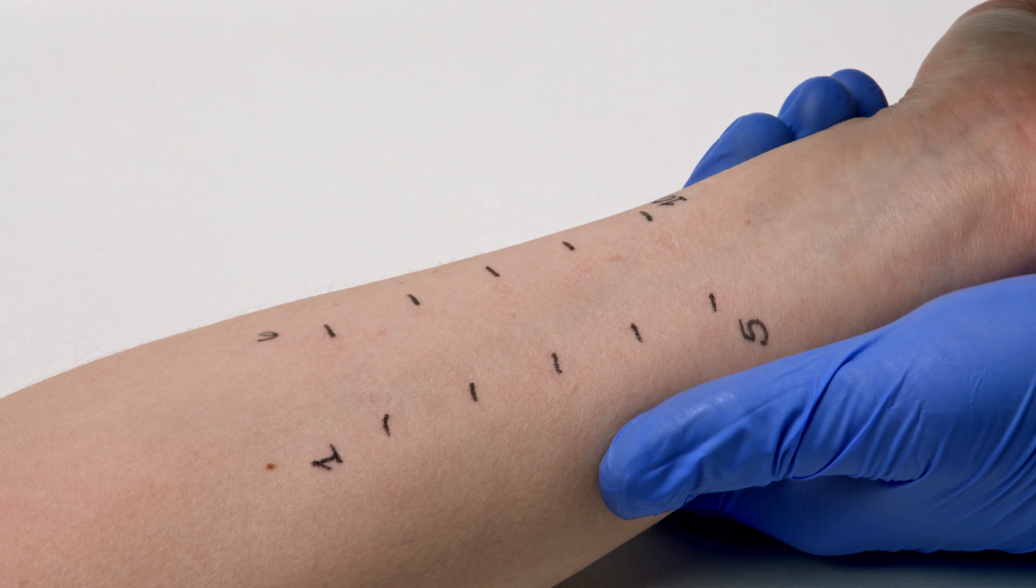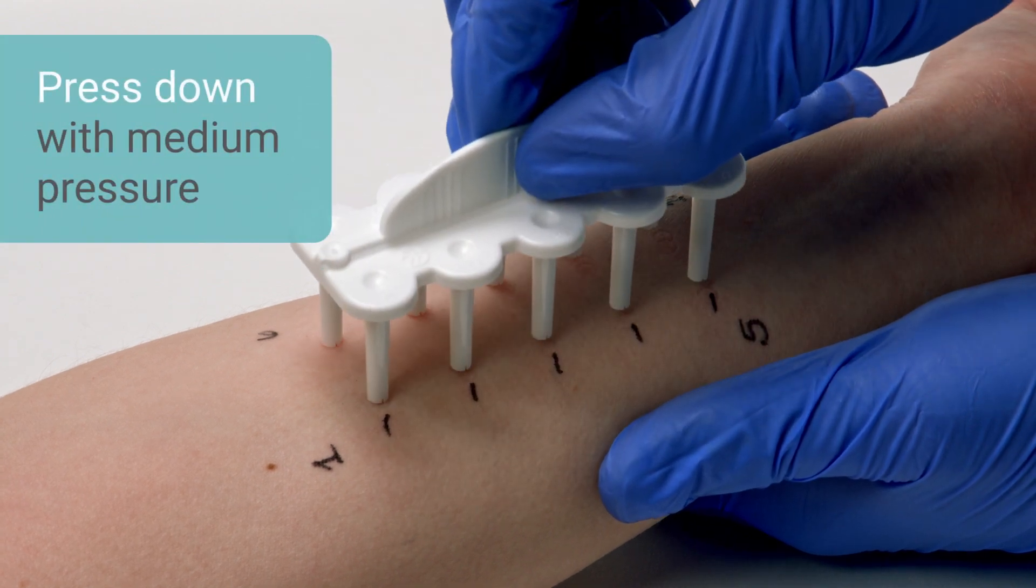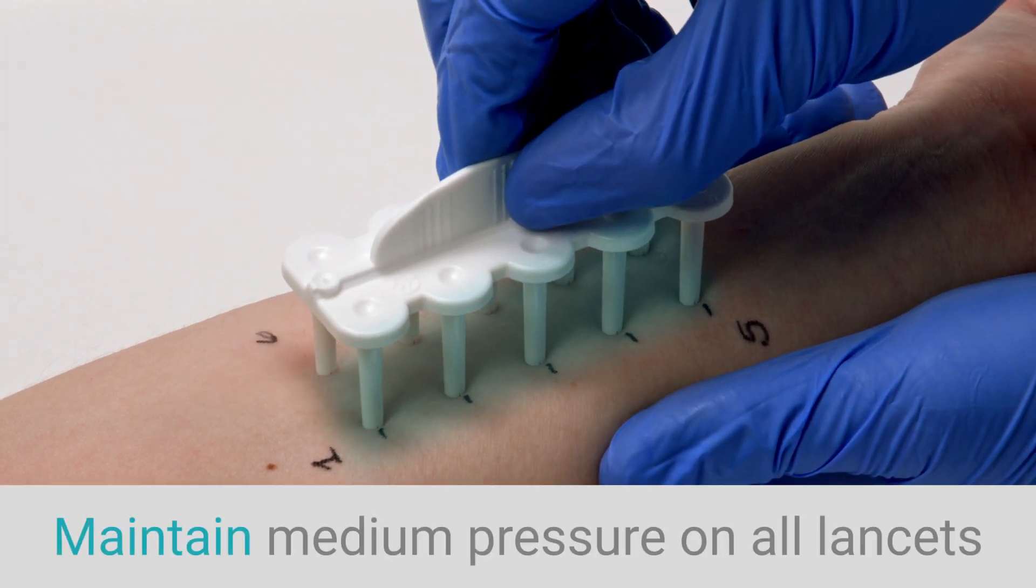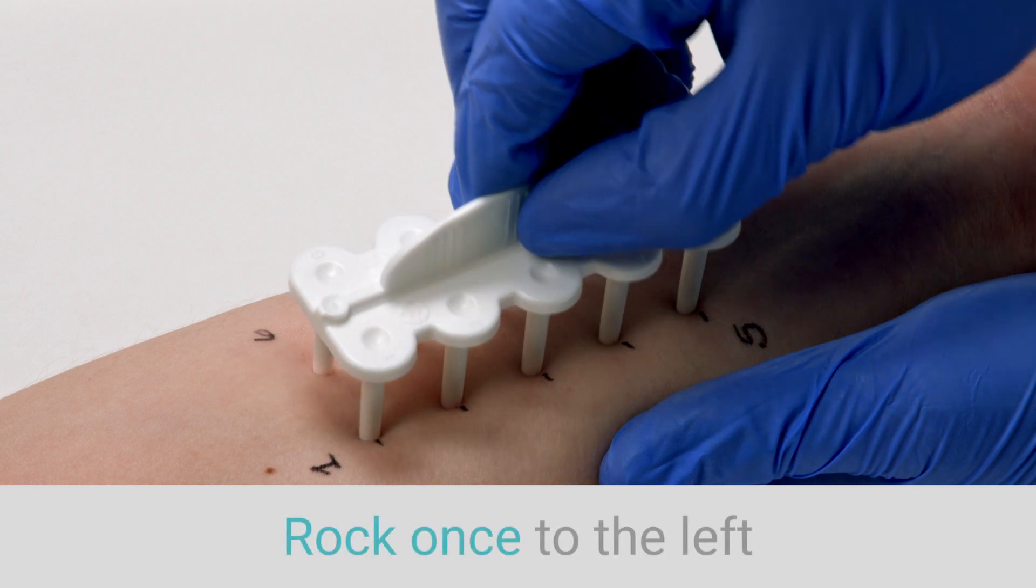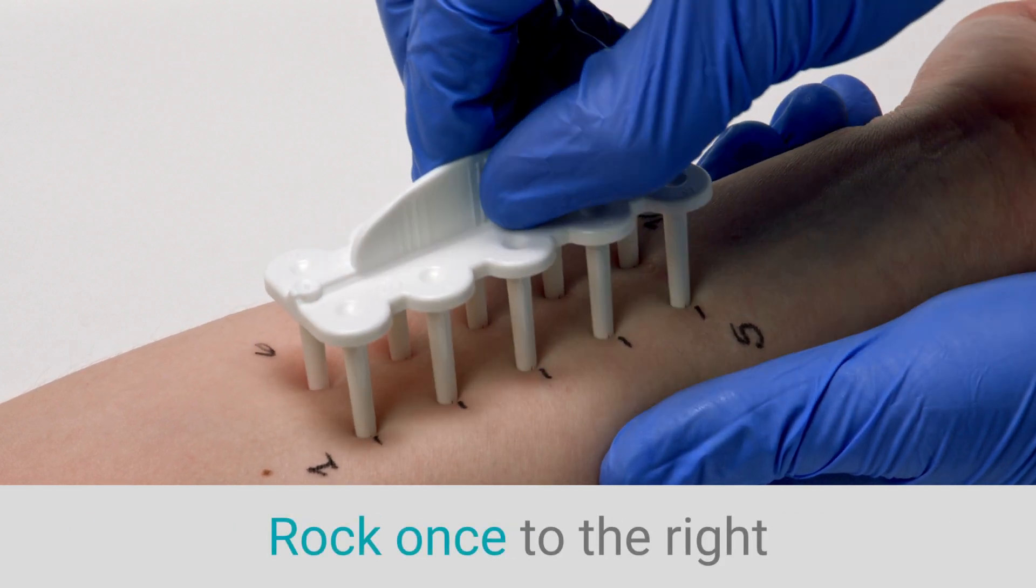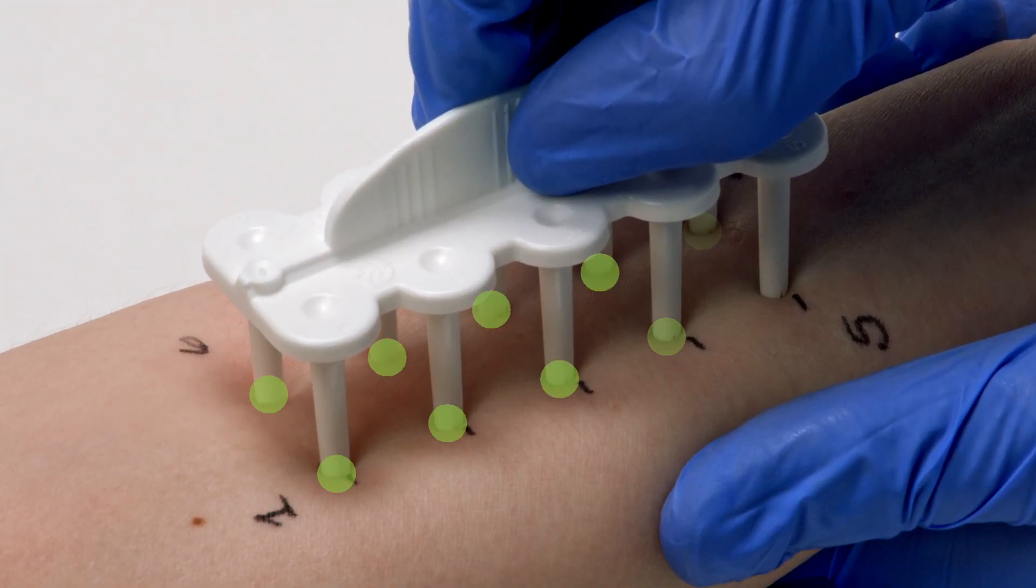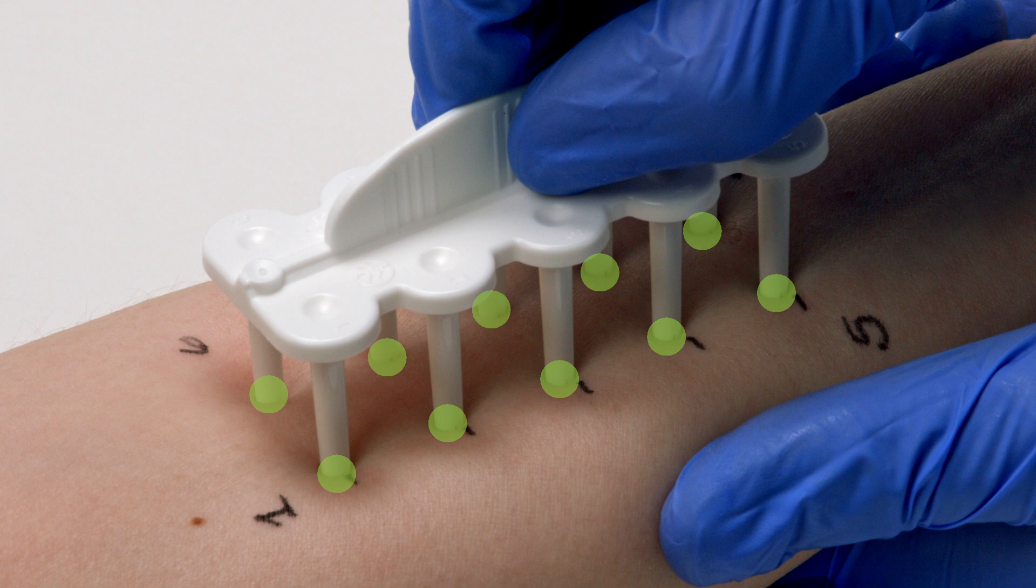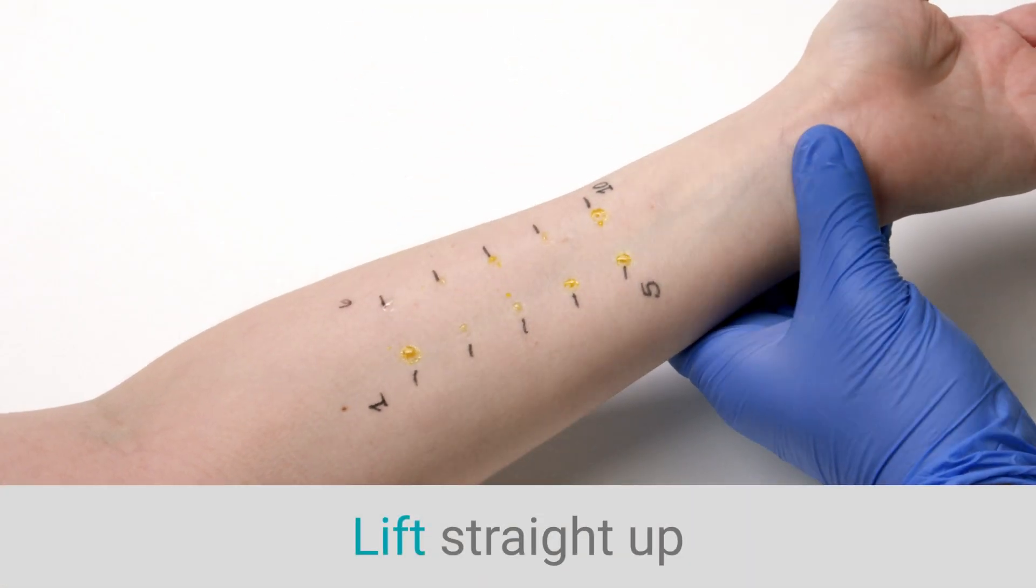With the Comforten device perpendicular to the skin, press down with medium pressure. Maintaining this pressure, slightly tilt the device once to the left and then to the right, while ensuring that all 10 lancets remain in contact with the skin. Remove by lifting vertically.